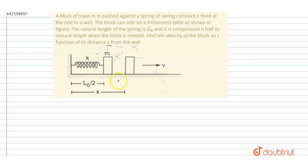So you can see initially the spring is compressed by L0 by 2. And when it will be at a distance of x, then the compression in spring will be L0 minus x.